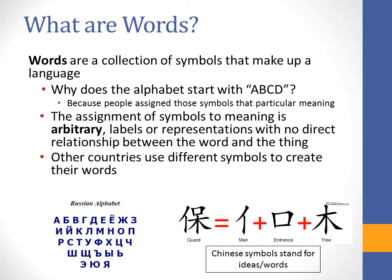Those symbols are arbitrary. Somebody literally just said, hey, we're going to take that A and it's going to have this shape and we're going to eventually have it spell these kinds of things. There is no direct relationship between the word and the thing. Other countries use different symbols to create their words. On the lower left-hand side, you'll see the Russian alphabet, and on the lower right-hand side, you'll see the Chinese symbols, which stand for ideas and for words.